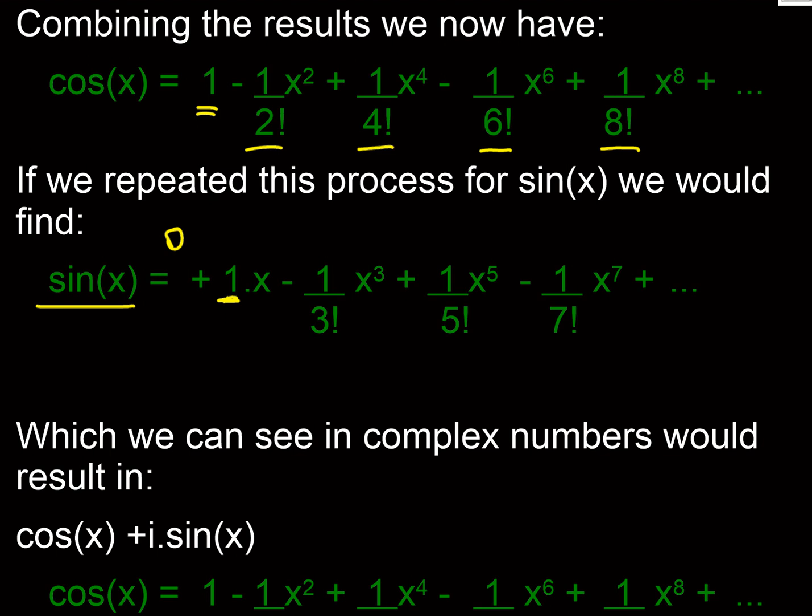And when we differentiate it again, we come back, and as we've gone around the cycle, we've now differentiated to a cos and we end up with minus sin. So we end up with minus 1 over 3 factorial.